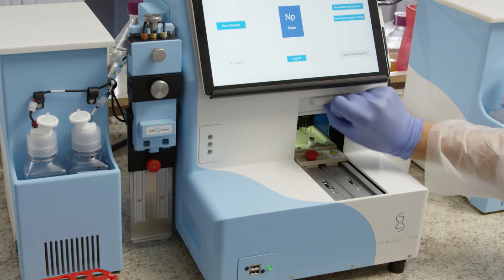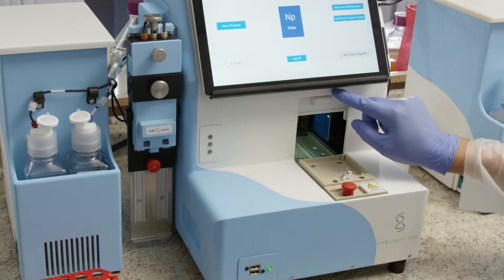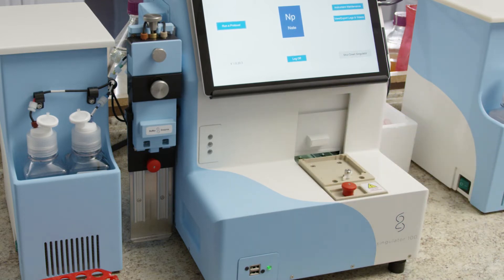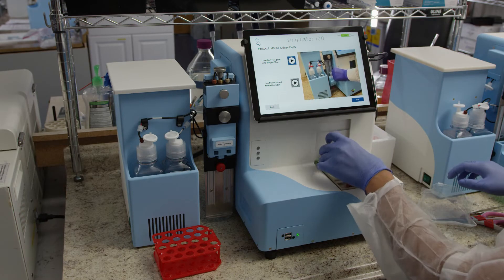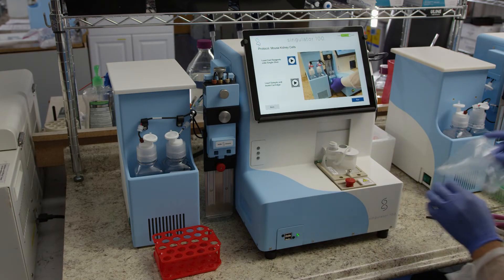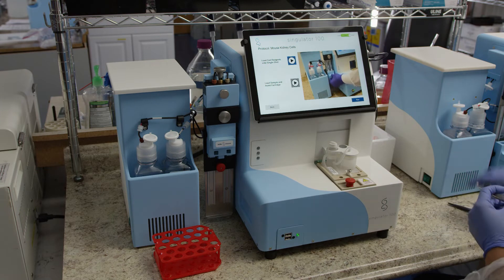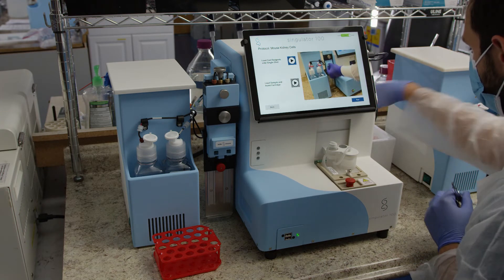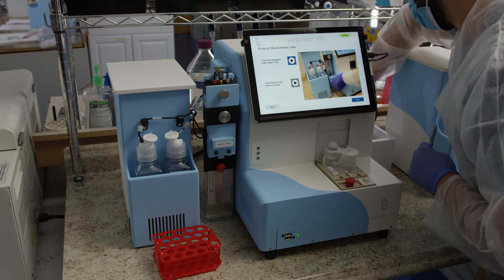Open the door in the front of the Singulator. Lift the red knob to release the sample stage and slide the stage out of the Singulator. Place the sample cartridge on the sample stage in proper orientation so it sits flat on the stage. Rotate the cartridge lock to secure the cartridge in place.